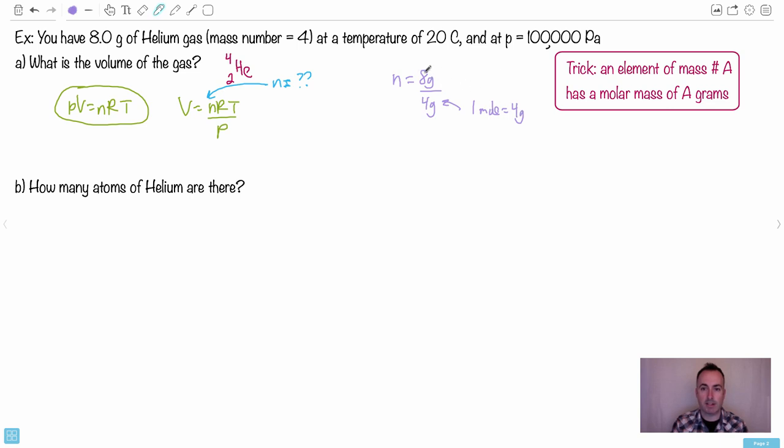So what you can do then, you can use this idea. I'll maybe do on the side: n equals, let's see, we have 8 grams of the material, and we know that one mole of this material is going to be 4 grams.